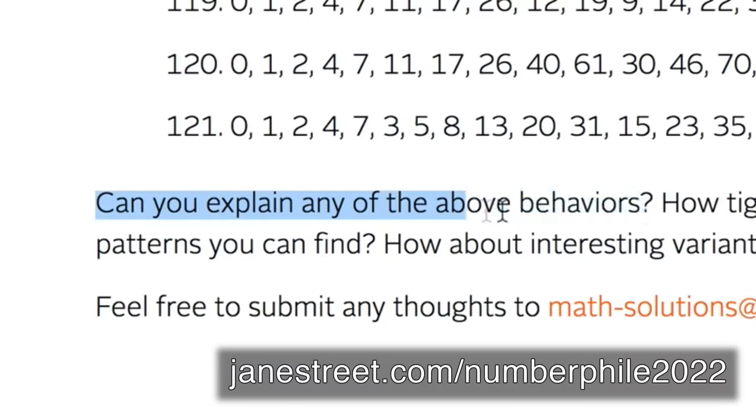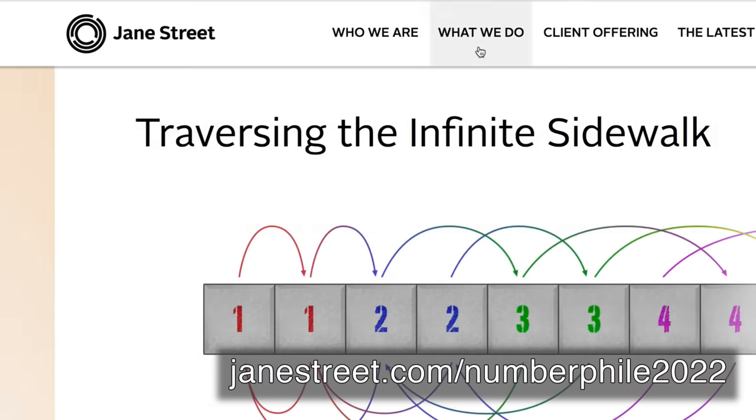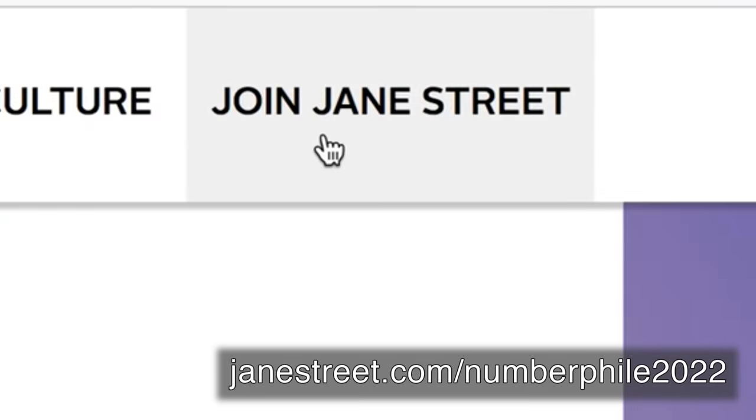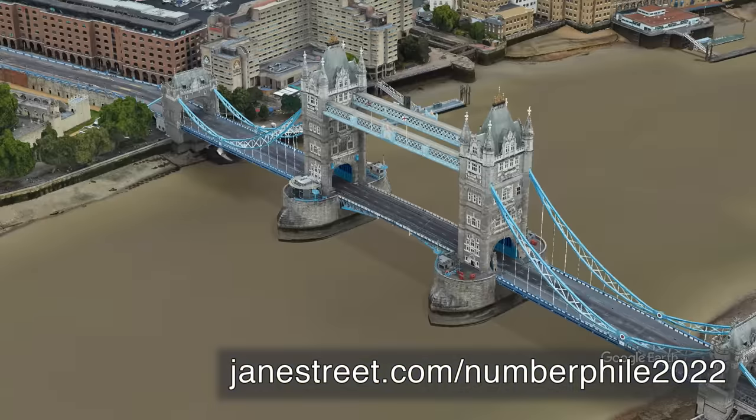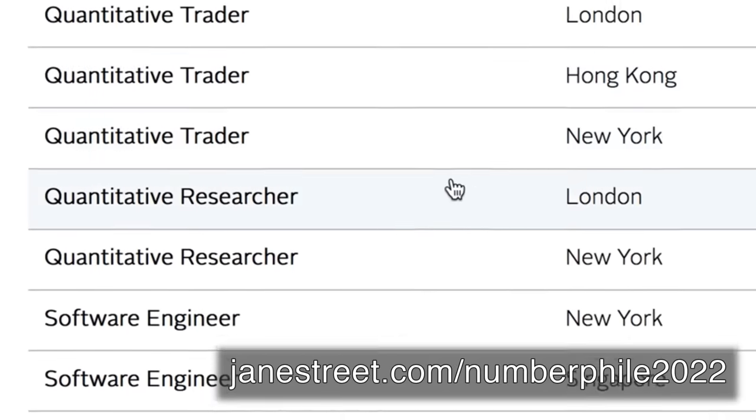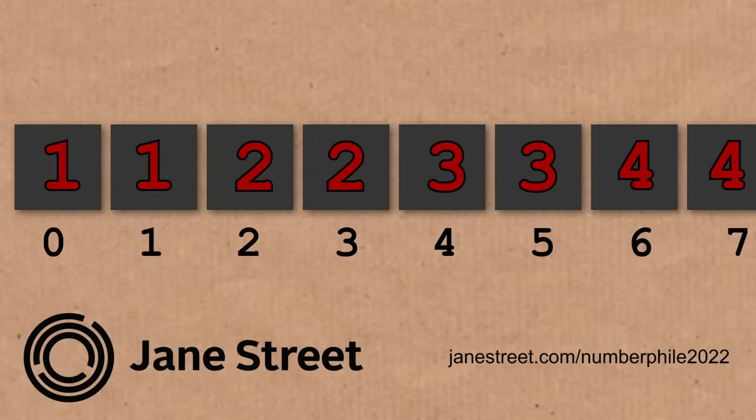While you're there, if you've got a brain for problems and numbers and stuff like this, you may be the sort of person to join Jane Street's genius teams around the world. They've got offices in Hong Kong, New York, London. Check out details on their website. There'll be links in the video description. And have some fun with this infinite pathway.